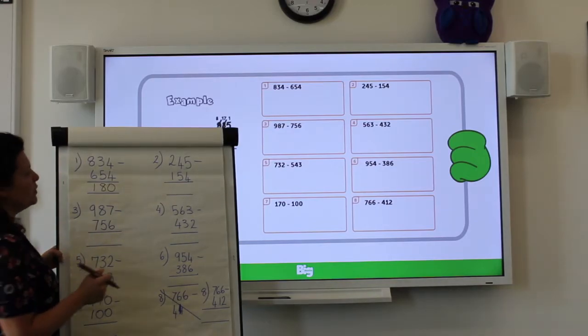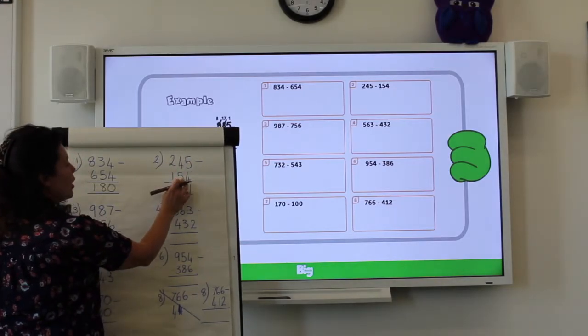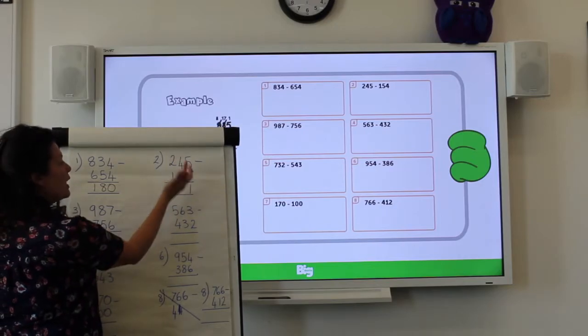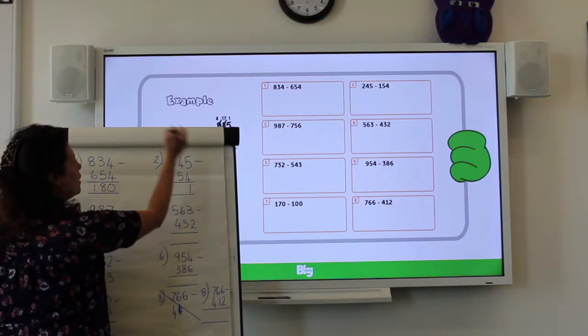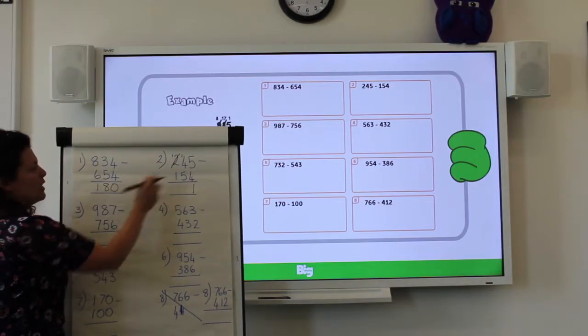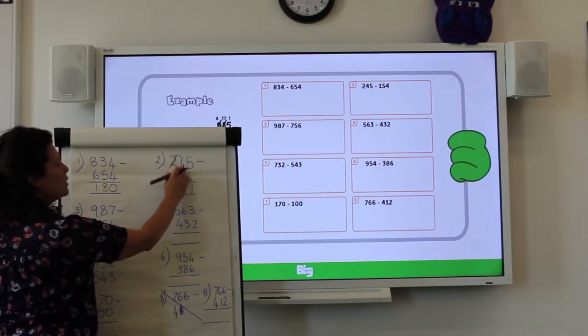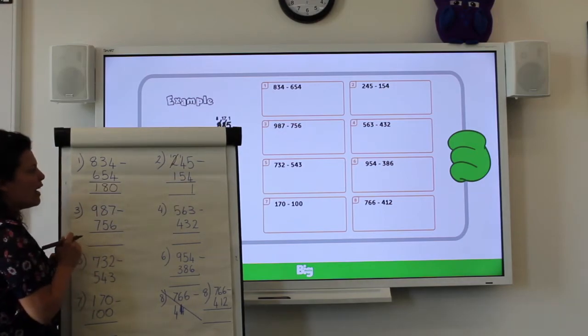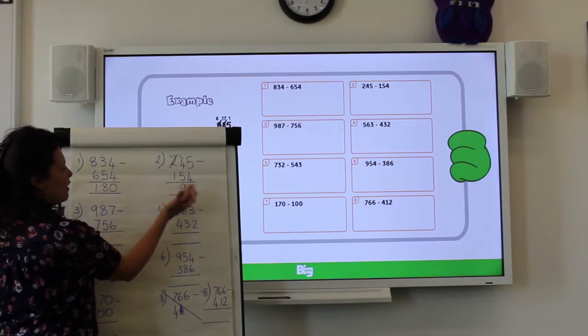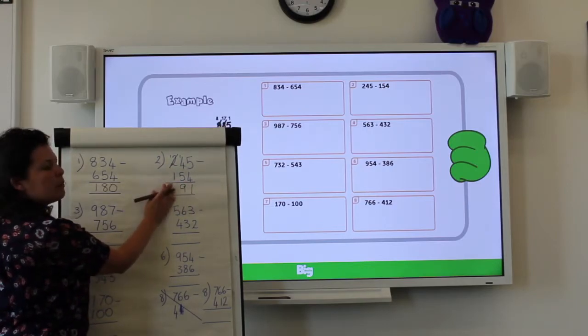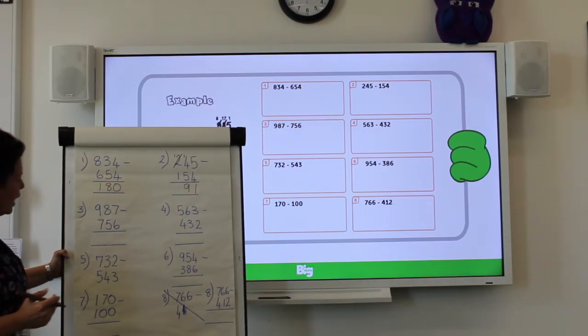245 take away 154. 5 take away 4, I can do that. That's 1. 4 take away 5. 5's too big so I need to borrow. I'm going to borrow from that 100. This becomes 1, and I'm going to borrow that over there. So now this is my 14 tens. If I look at it just as 14 take away 5, that's 9. 1 take away 1 is nothing, is 0. So you may write that 0 there. I'm going to not write it. And the answer for that is 91. Well done if you've got that one right.